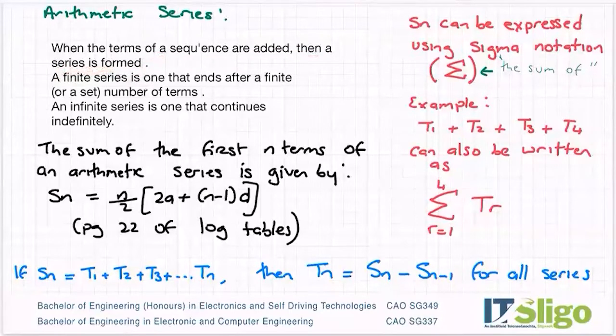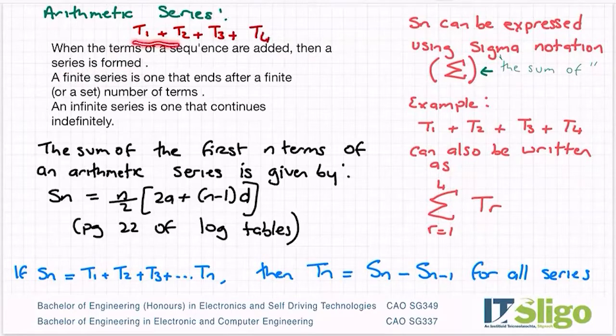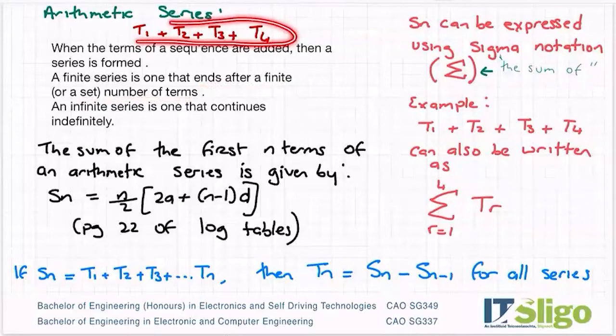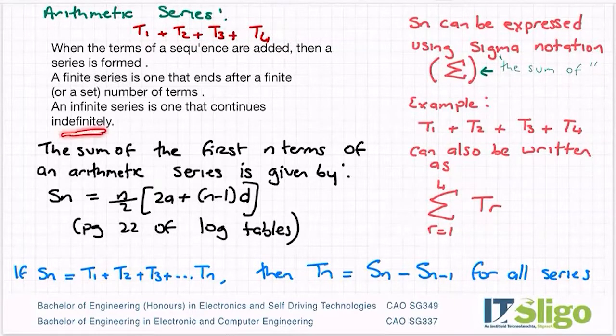So in our case here, it would be, for example, T1 plus T2 plus T3 plus T4, for example. Now that becomes a series. So you have two types and this is just in general. You have two types of series. You have a finite series is one that ends after a finite number of terms. So you can see in this would be a finite series because I'm just adding four terms together. An infinite series then is one that continues indefinitely. An infinite series you will come across in a bit when we look at geometric series more so.